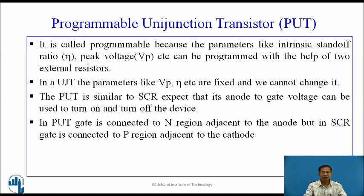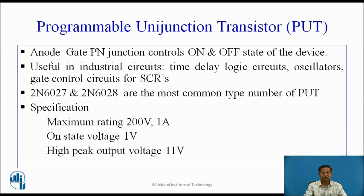The PUT is similar to SCR, except that its anode-to-gate voltage can be used to turn on and turn off the device. In PUT, the gate is connected to the N region adjacent to the anode, but in SCR, the gate is connected to the P region adjacent to the cathode. The anode-gate PN junction controls the on and off state of the device. PUT is useful in various industrial circuits like time delay circuits, logic circuits, oscillators, and gate control circuits for SCRs.